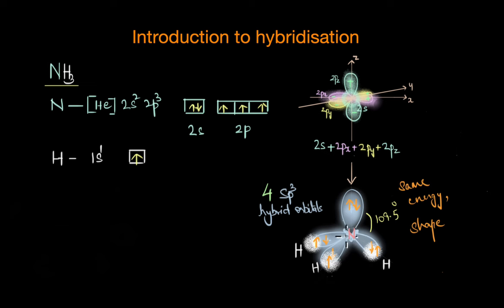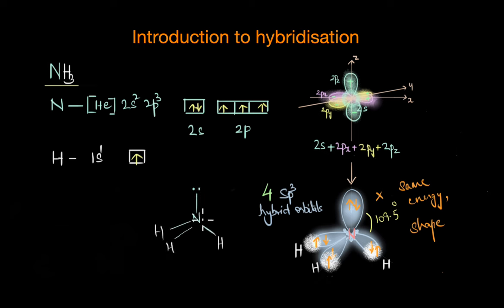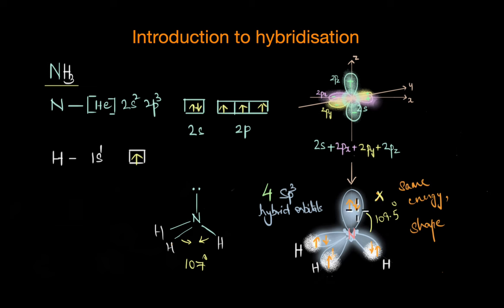Even though our hybrid orbitals are arranged in a perfect tetrahedral structure — ideally giving a bond angle of 109.5 degrees — the H-N-H bond angle in ammonia is actually less than that, because of the lone pair of electrons. Lone pair repulsions are much stronger than repulsions between bonding pairs, so lone pairs occupy a larger space and force the bonds to squeeze inward. As a result, the H-N-H bond angle decreases to 107 degrees instead of 109.5 degrees of a perfect tetrahedral arrangement.